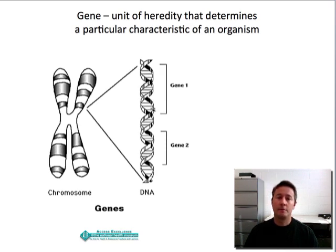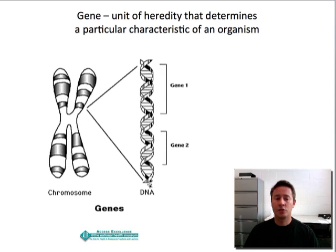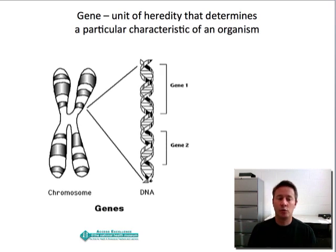For organisms like humans, our cells are called eukaryotic cells — they have a nucleus. The DNA is normally not in this loose double helix form; it's actually compacted really tightly into what are called chromosomes. So the DNA gets wrapped around proteins and then condensed into a really small space, forming these highly condensed chromosomes that can fit into the nucleus of the cell.